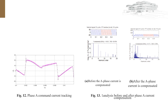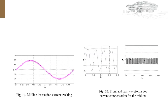Figure 12 is the case where the APF phase output current tracks the phase command current, and Figure 13 shows the compensated current before and after the power supply. As can be seen, the supply current after APF compensation is basically a sine wave. The total harmonic distortion rate of the supply current was reduced from 18.45% before compensation to 3.76%, and the current harmonic component was effectively suppressed. Figure 14 is the APF fourth-leg output current tracking the middle command current, and Figure 15 shows the front and rear middle command current after compensation.